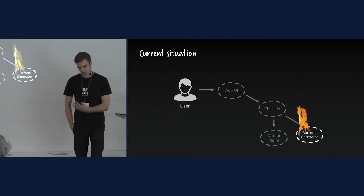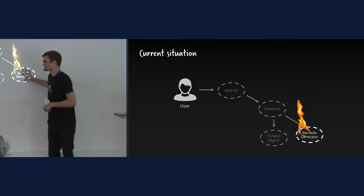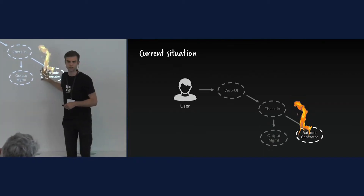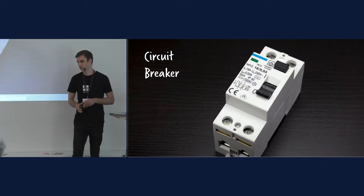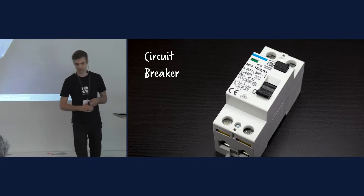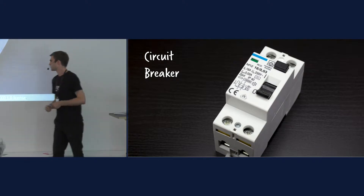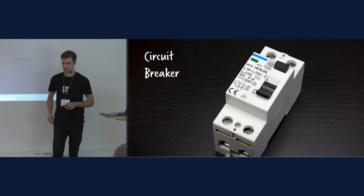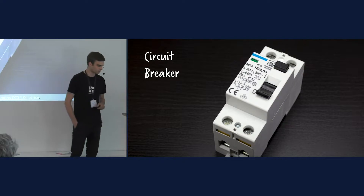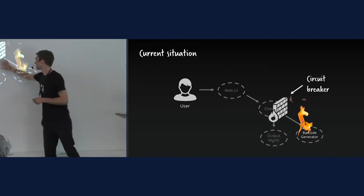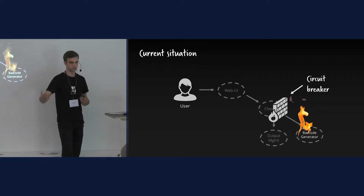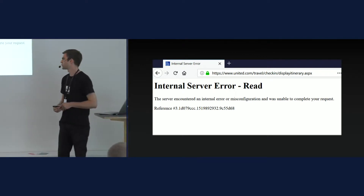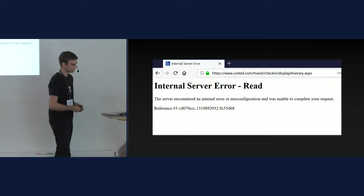The good thing is they implemented it so that only because barcode generation is broken, the whole web UI isn't broken. I can still use the web UI, but the problem is local. One thing you can use for this is the circuit breaker pattern — nothing we reinvented at Camunda. In case an error occurs, we switch the circuit breaker and stop trying to communicate to that service until it's back up. United Airlines, by contrast, just shows an internal server error with the whole web UI broken.